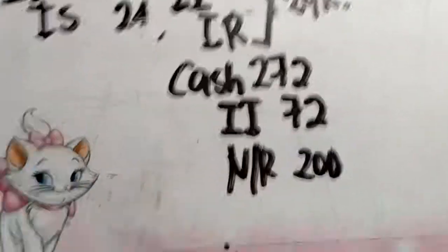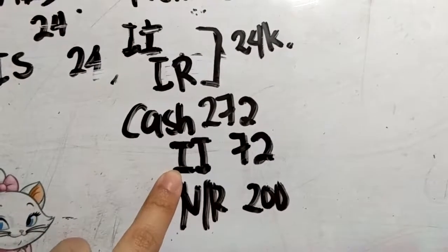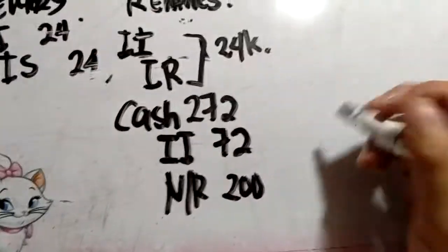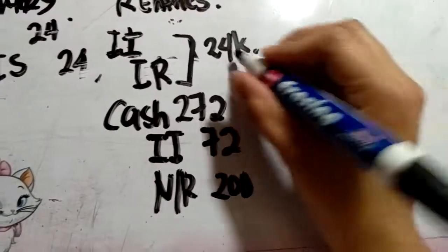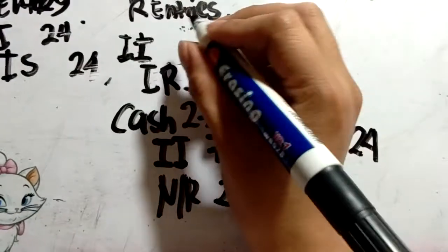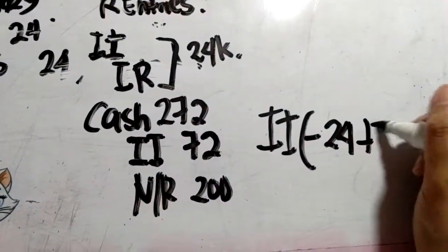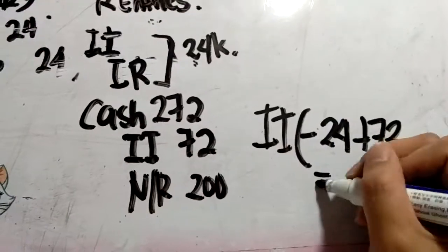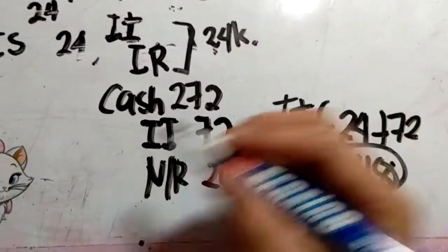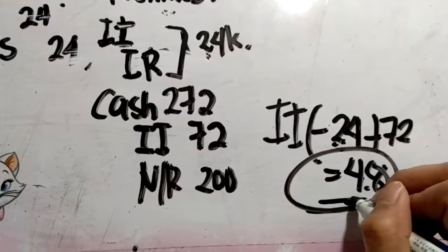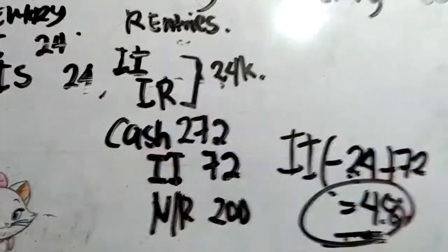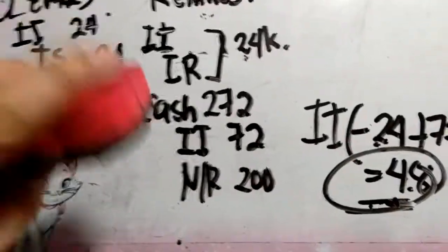So as of August 30, the interest income has an abnormal balance of negative 24 from the reversing entry, then we add 72 from the collection, giving us 48 — which is correct, because 24 belonged to last year. So 48 is the correct balance of interest income at that point. That's the convenience of reversing entries.